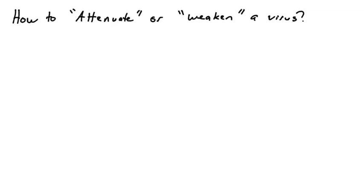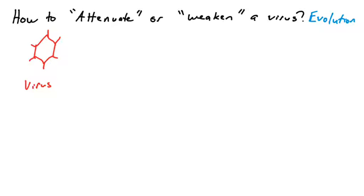Now let's talk about how one goes about attenuating or weakening a virus. If you're getting the measles vaccine in your MMR shot, you're getting injected with the measles virus, but that virus isn't causing disease. It's been weakened because it's been grown in the lab and allowed to evolve away its ability to cause disease. If you recall evolution from freshman biology — variation, selection, and adaptation — that's exactly what's happening to these viruses when scientists want to attenuate or weaken them.